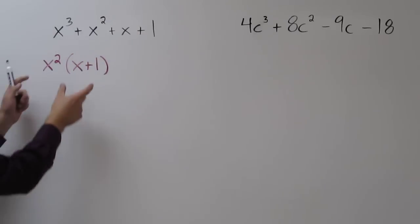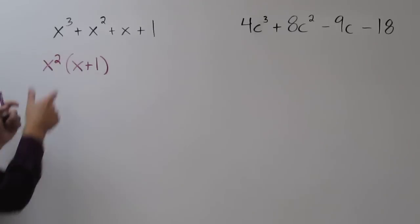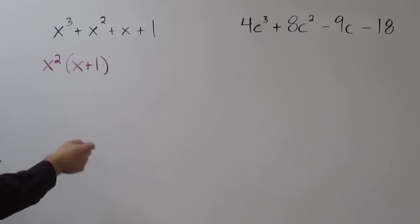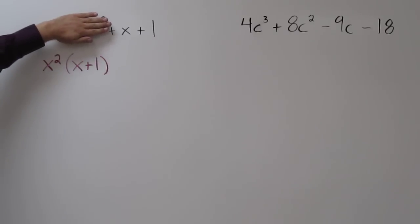We can confirm that this is a correct factorization by going x squared times the quantity x plus 1 does get us back to x cubed plus x squared. At this point, let's look at the other two terms, x plus 1.